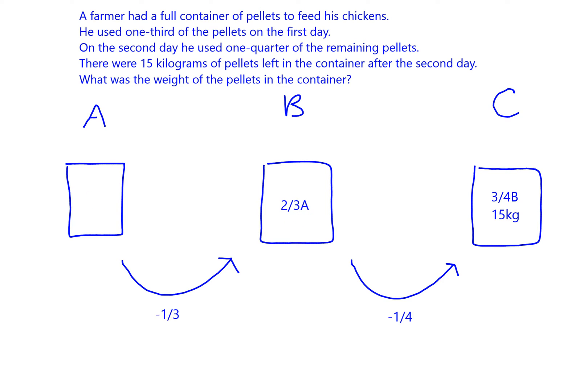On the second day we use a quarter of what's left. That means if we've taken the quarter away we'll have three quarters of what we had at the beginning of this particular day. The other piece of information we know is that we are left with 15 kilos worth of pellets. So that's all we need to work backwards and solve the problem.